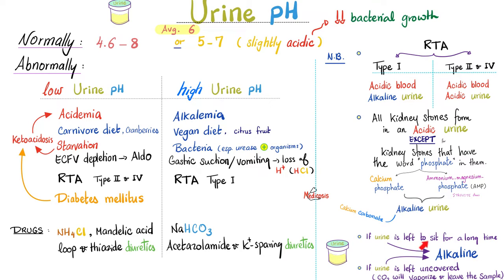If the urine sample is allowed to sit or stand for a long time, the urine will become alkaline — even if the patient's urine pH was 6, if you allow the sample to stand for a long time, it will turn alkaline. When it comes to urine samples, it has to be fresh. Moreover, if the urine is left uncovered without the cap, carbon dioxide will leave the urine sample. Carbon dioxide is an acid — CO₂ plus water equals carbonic acid — so when the acid leaves the sample, the sample becomes more basic.